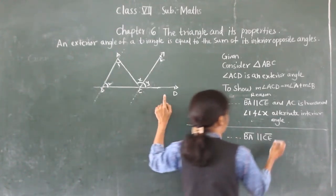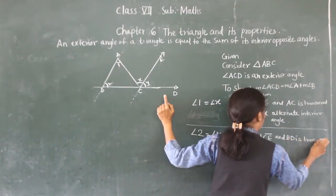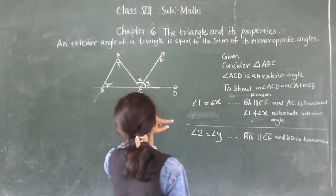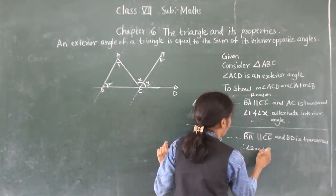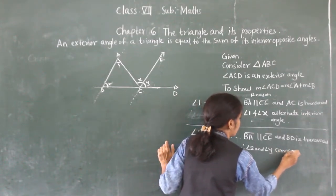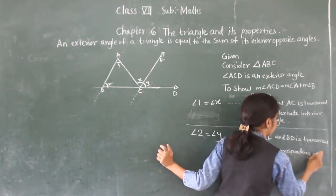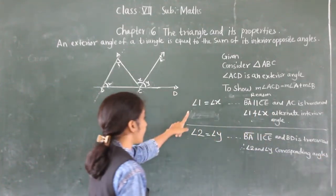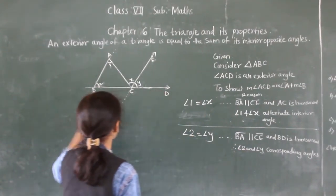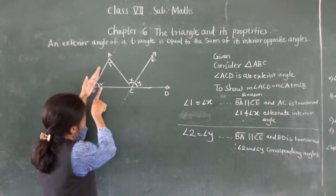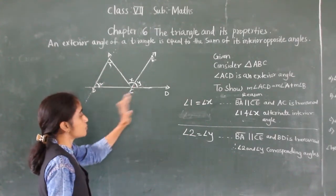Because BD is the transversal, angle 2 and angle Y are corresponding angles, and therefore angle 2 equals angle Y.